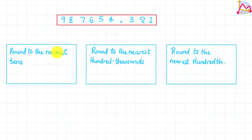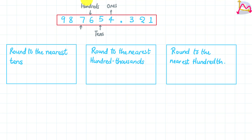We need to recognize a couple of steps to accomplish this particular question. First, we need to assign the following place values to the specific digits on this number. We're going to start from our decimal point and move to the left. Four is recognized as the ones place value; five is recognized as the tens; six is recognized as hundreds; seven is recognized as thousands; eight is recognized as ten thousands; and nine is recognized as hundred thousands.